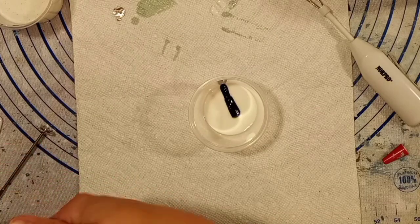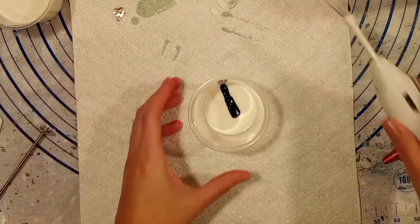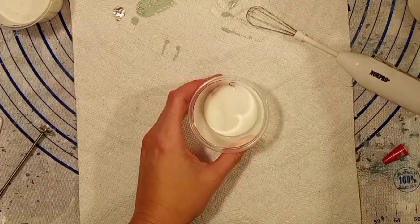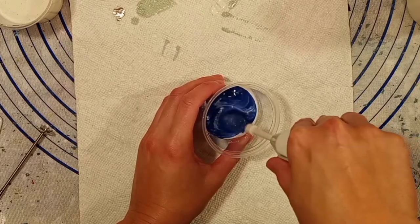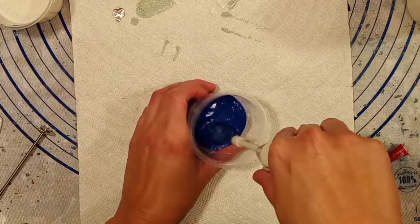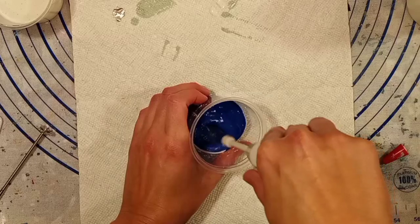I started with the whisk attachment here just to see what that would do. I just put a little bit of Floetrol on the bottom just like I would normally, and I kind of pulsed it around a little bit and it seemed like it was blending pretty quickly.